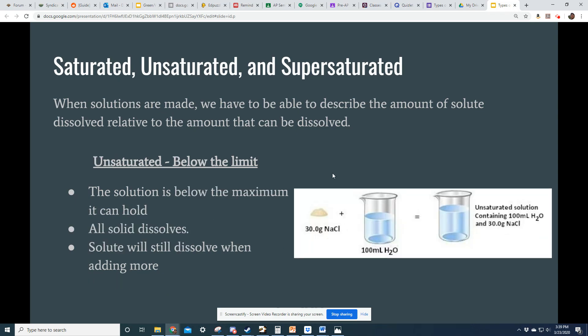Now an unsaturated solution is one where we are still below the limit of the amount of solute I could dissolve at a given temperature. This means that all of my solid has dissolved. And if I add any more, I can still dissolve it. So I can do a quick test to see if a solution is unsaturated by adding some solute. If it dissolves, then it'll go back to just being a clear solution and I'll know that we were unsaturated.